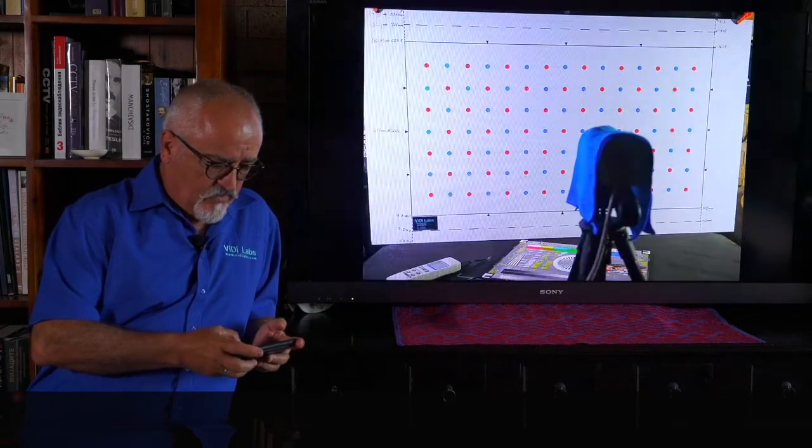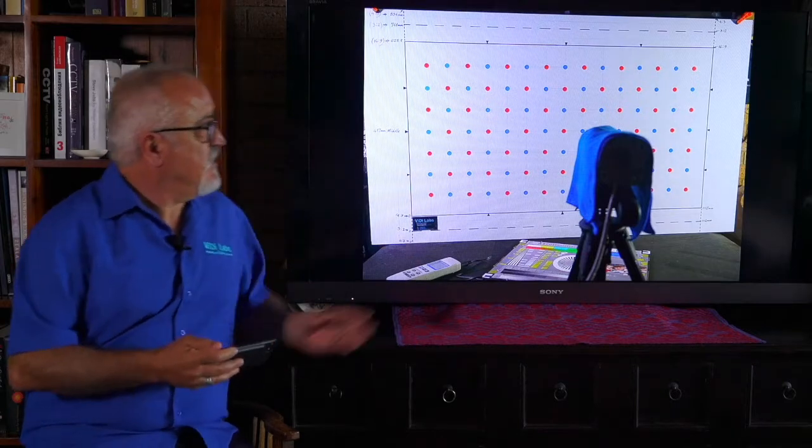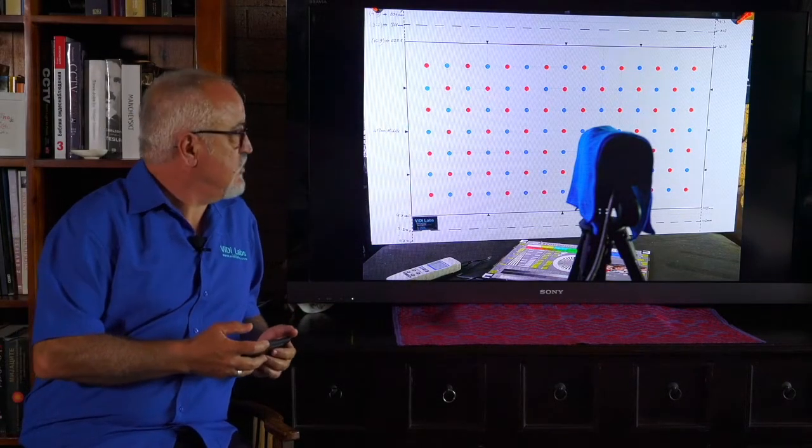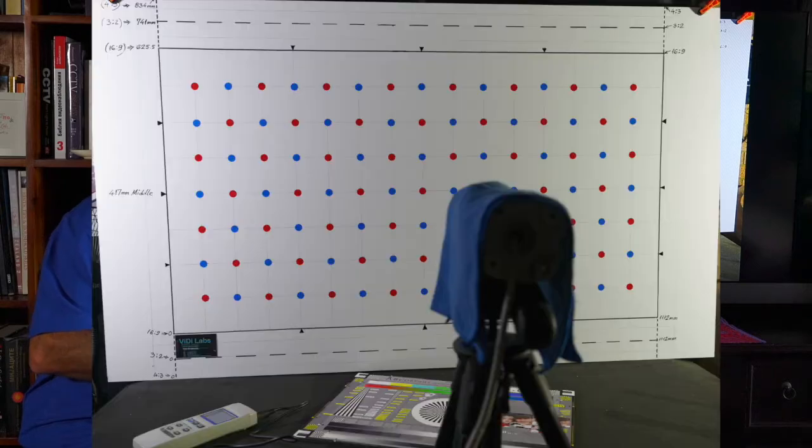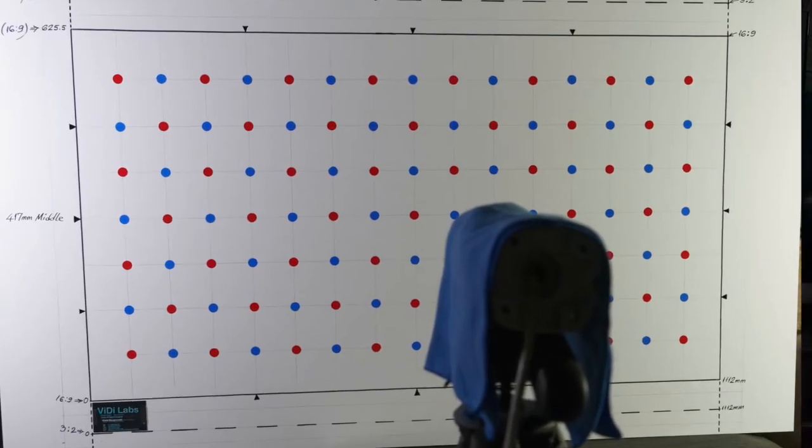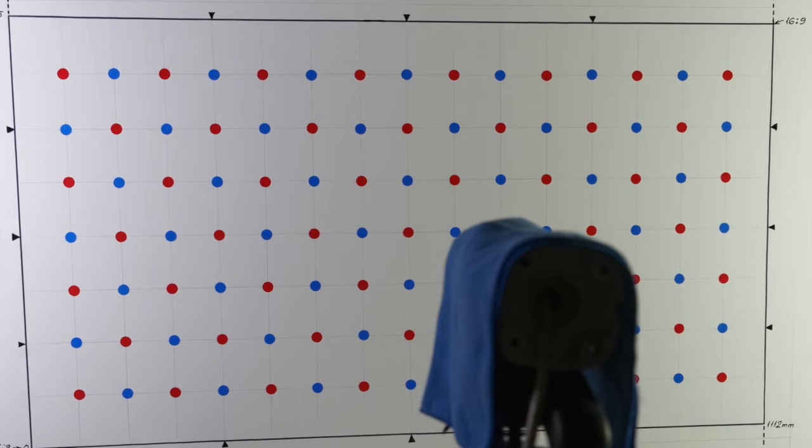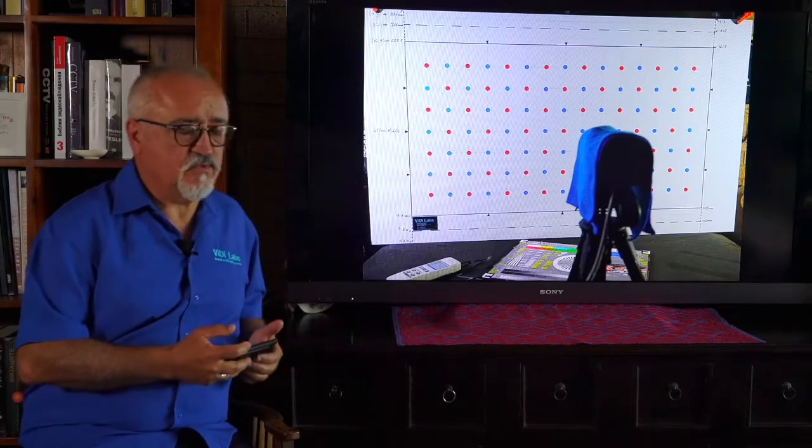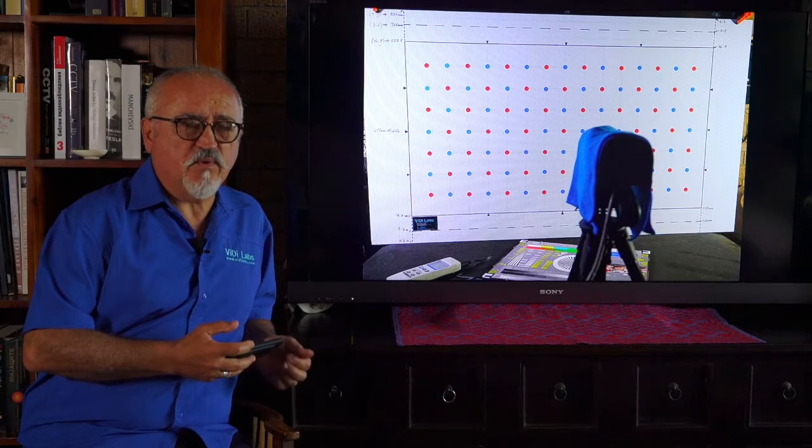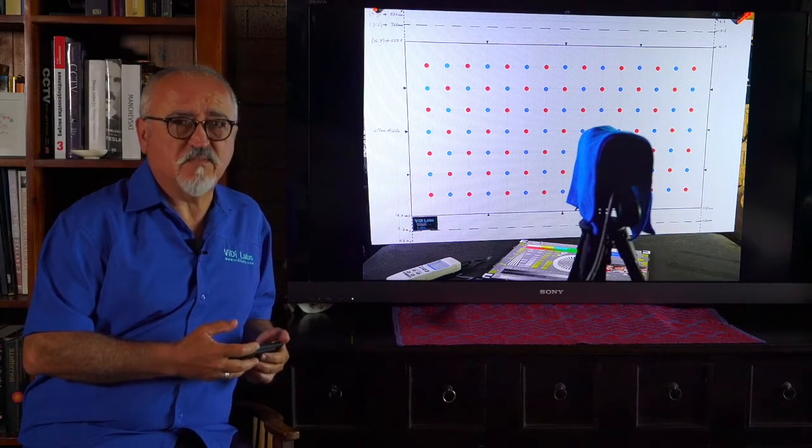What we did, we made a setup of a test chart with a lot of dots as you can see, red and blue, a grid, 16 by 9 aspect ratio. And we put the camera on the test. We covered it up so we don't have to give away who was the manufacturer, but it will probably apply to most of the CCTV manufacturers.